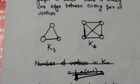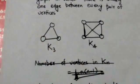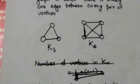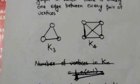For example, these two graphs are complete graphs because in these graphs there is exactly one edge between every pair of vertices.